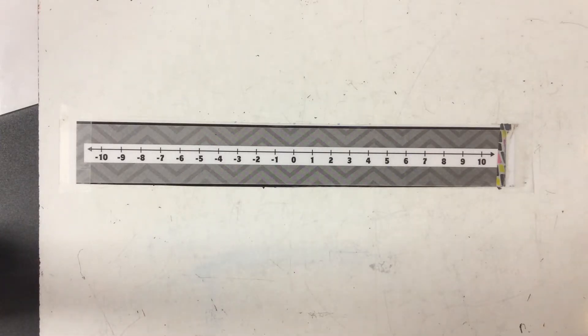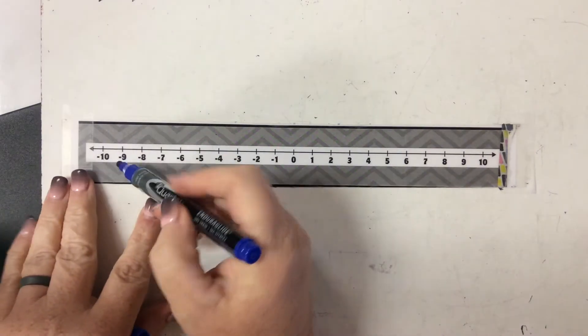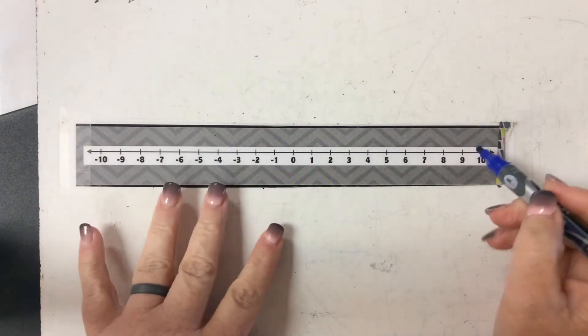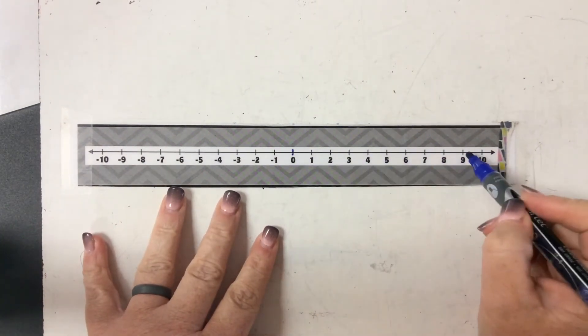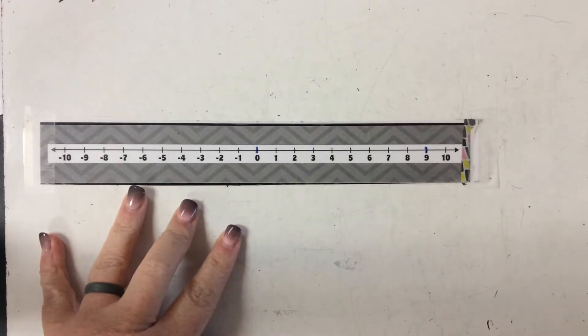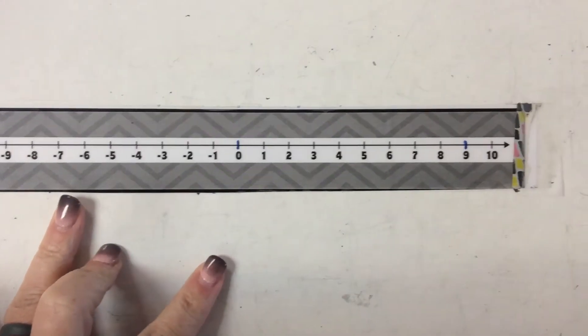All right guys, for this first problem, the question is: what is the opposite of 9? So if we think about our number line, how far is 9 from 0? If I start at 9 right over here and I go to 0, I'm going to count. Now it's important not to count the jumps.